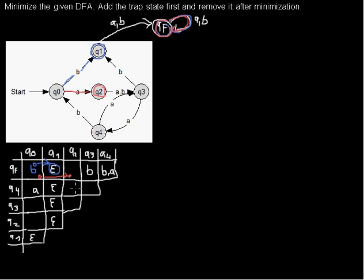Next, Q4 and Q2 have to be compared. When I take any arc from Q2 I go to Q3, and from Q4 with A I go to Q3 as well — that's the same, so it tells me nothing. When I go from Q4 with B to Q0, I have to look at Q0 and Q3, but I haven't written anything in that cell yet. So I can't say anything for those cells yet and have to move on.